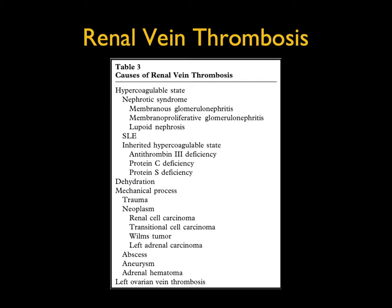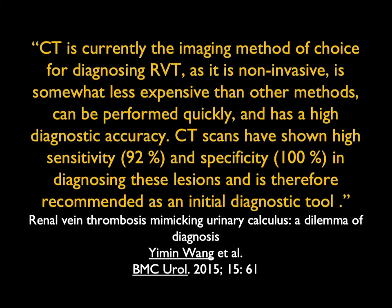Renal vein thrombosis is interesting. We don't see all that many cases. Most of the time, renal vein thrombosis is when you have a renal cell carcinoma and you're looking for vascular extension. But it can be seen in nephrotic syndrome in about 20% of cases. It's also associated with abdominal surgery, trauma, tumor invasion, and retroperitoneal processes. When you look at the causes, they are numerous.